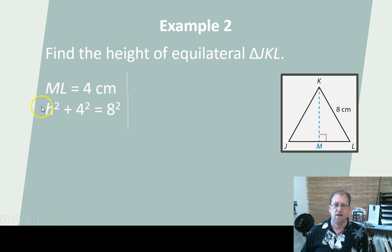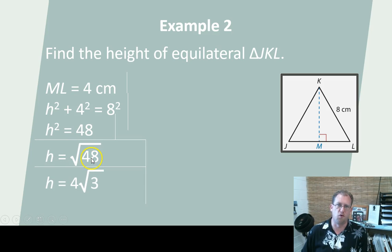ML is four. So H, the height of this triangle, squared plus four squared equals eight squared. So that has to be 48. And they'd skip some steps here. This is 16 and this is 64. 64 minus 16 is 48. I wish they hadn't skipped that for you. H squared equals 48. So H is the square root of 48. You can simplify that to four radical three because 16 times three is 48. So the height here would be four radical three.